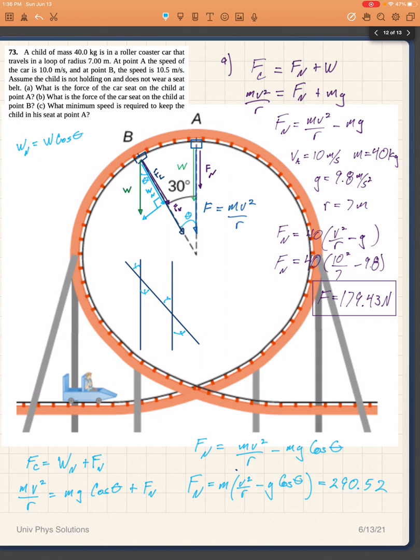For part C, what minimum speed is required to keep the child in his seat at point A? So if we're looking at point A, I know that the minimum speed that is required at point A would be one in which the normal force has no work to do. So basically the entire centripetal force would be provided by the force of gravity. So in other words, I'm looking at this equation that we use for point A.